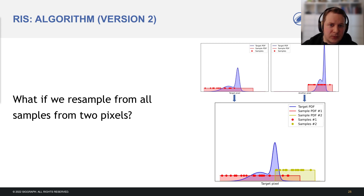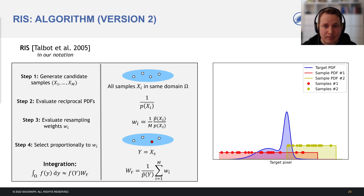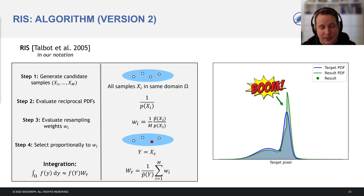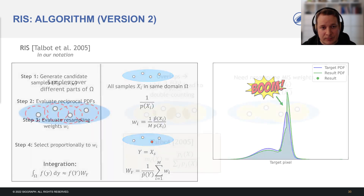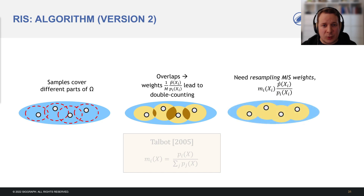But what if we want to maximize sampling quality by resampling from all samples in two pixels? Take all the samples, evaluate the reciprocal PDFs and resampling weights, and select proportionally to the resampling weights. Except that the realized PDF is wrong. The inputs cover different parts of the domain. We get overlaps, and these resampling weights lead to double counting. We must normalize with proper resampling MIS weights. Talbot proposed the balance heuristic.